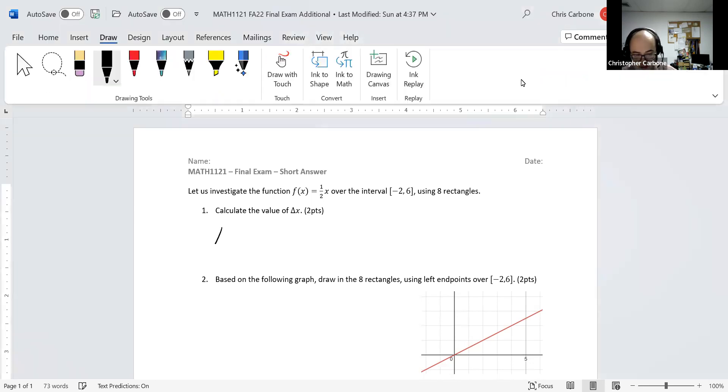So we recall that calculation to be b minus a divided by n, the number of rectangles. So in our case, b is 6, a would be negative 2, divided by n being 8. So 6 minus negative 2 divided by 8, this makes 8 divided by 8, or 1.